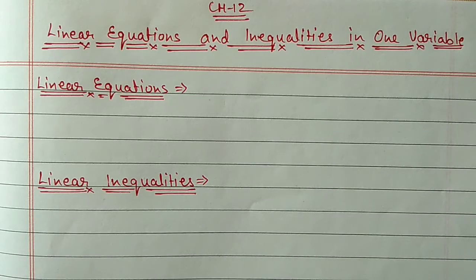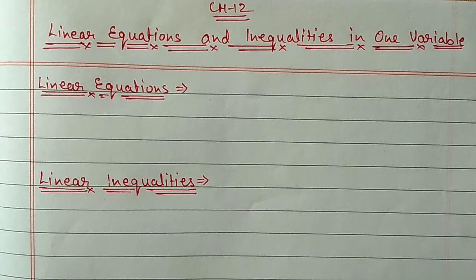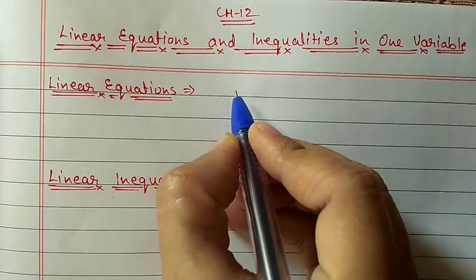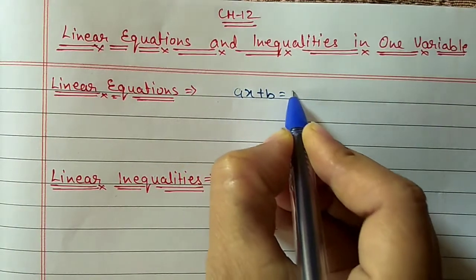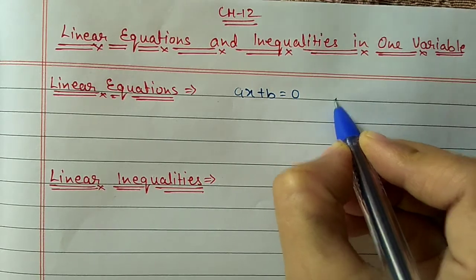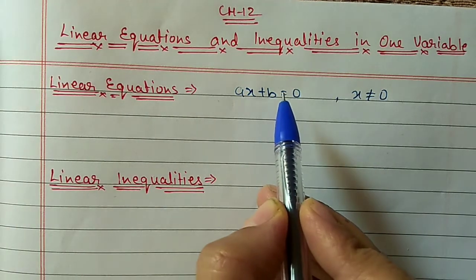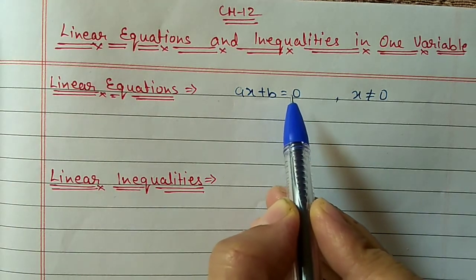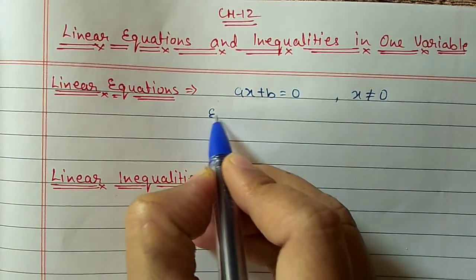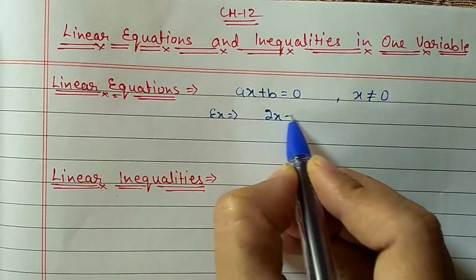Hello students, we are doing Chapter 12: Linear Equations and Inequalities in One Variable. Today we will discuss Exercise 12.3, but before that we will discuss what are linear equations and linear inequations. The last two exercises were based on linear equations. We know statements in the form ax plus b equal to 0, where a should not be equal to 0, are called linear equations. The main thing is you will get an equal-to symbol in a linear equation.